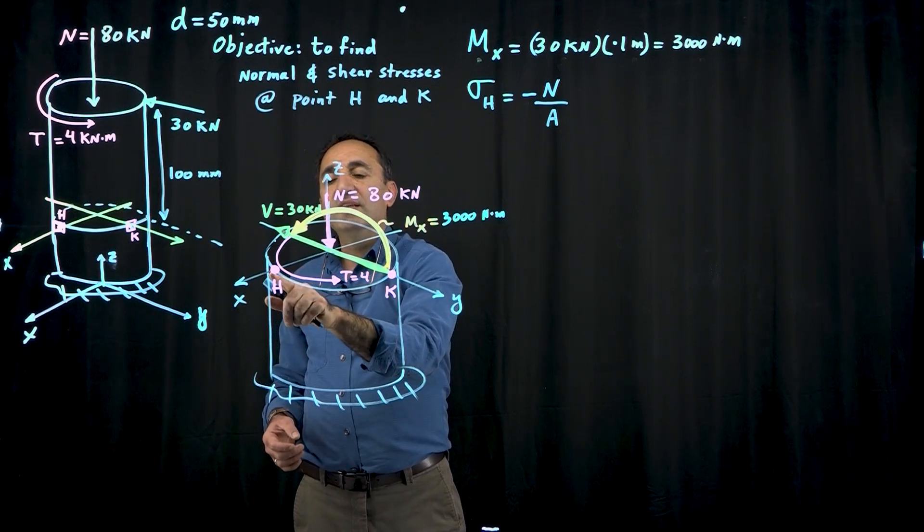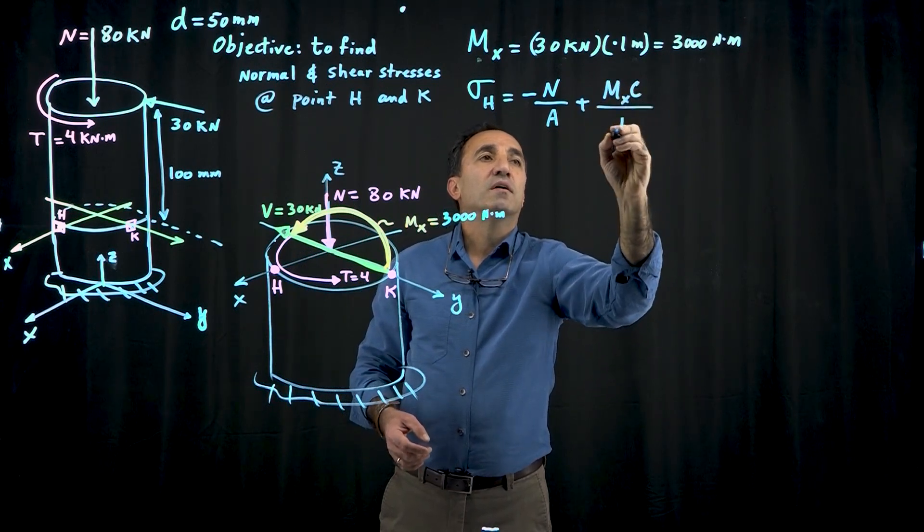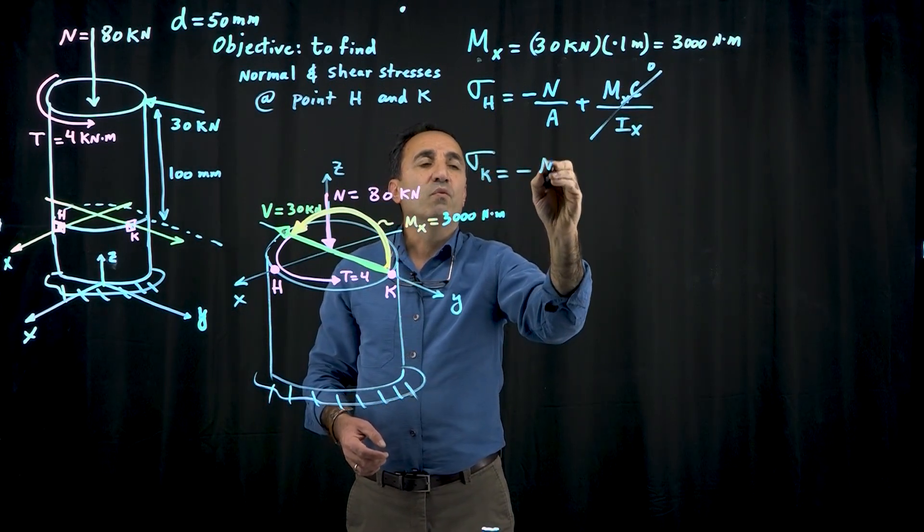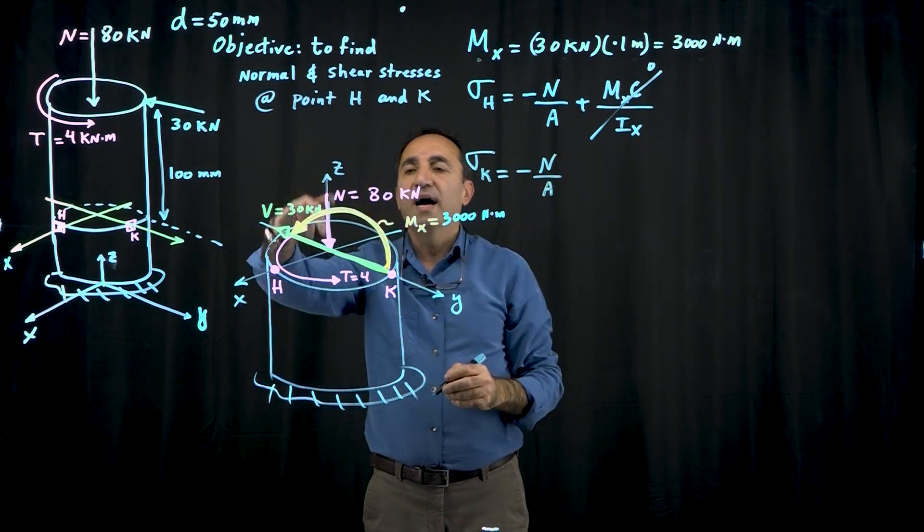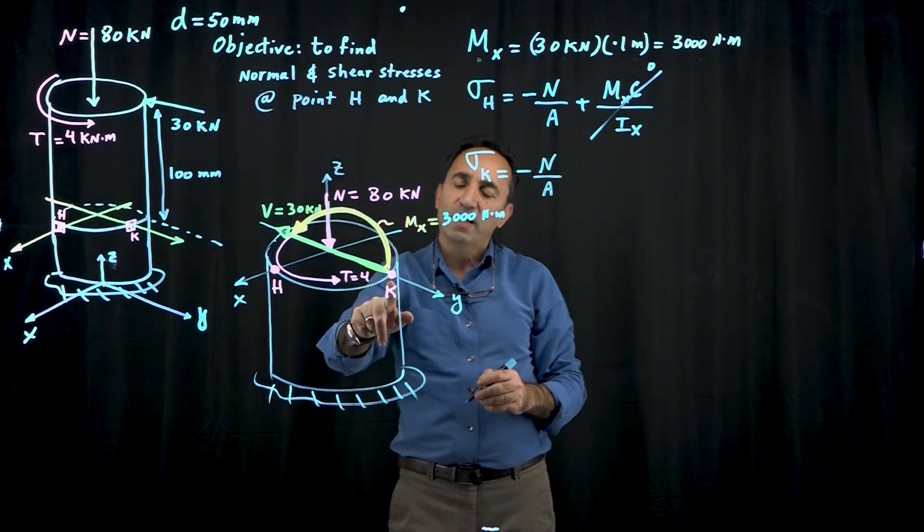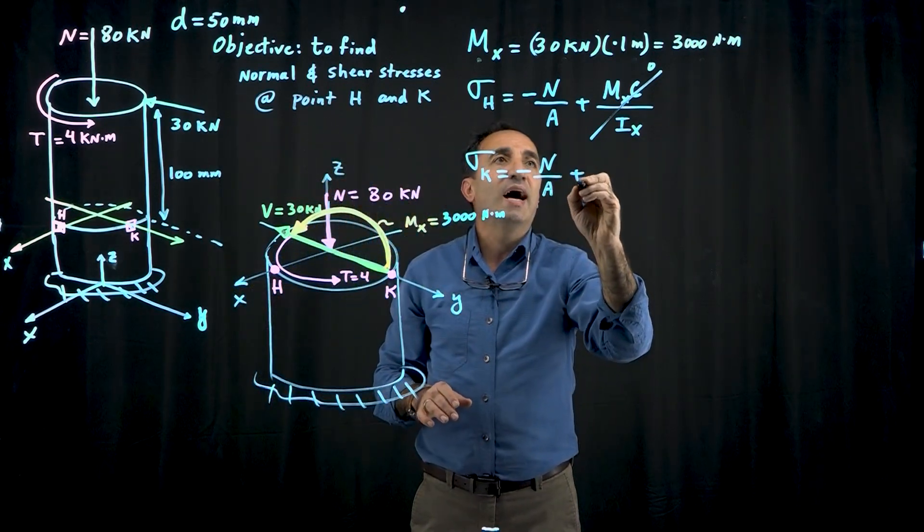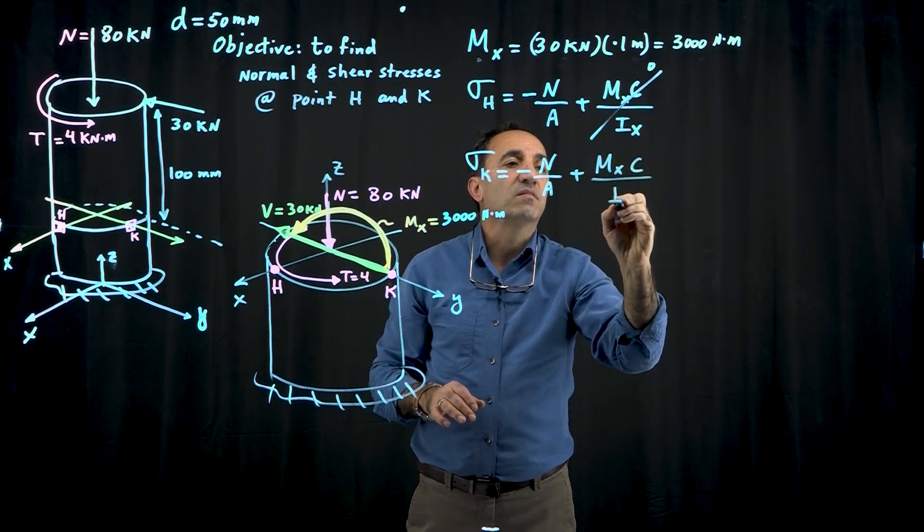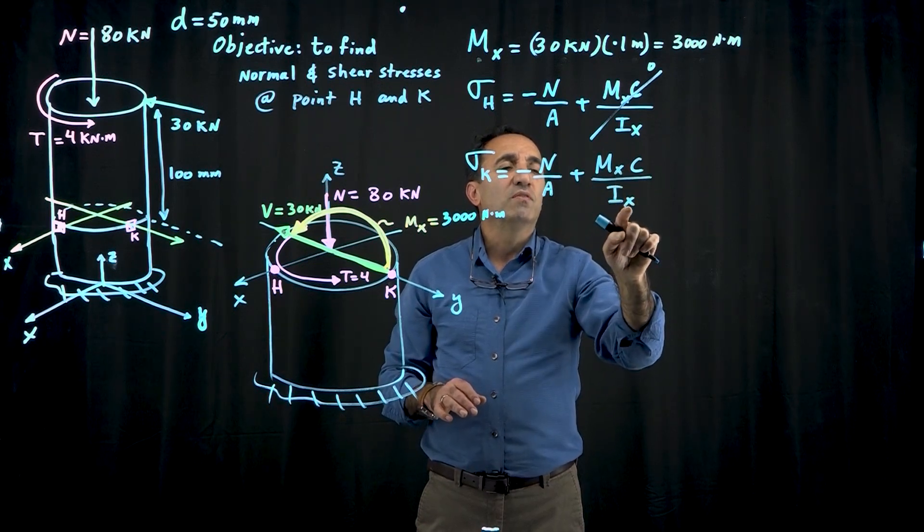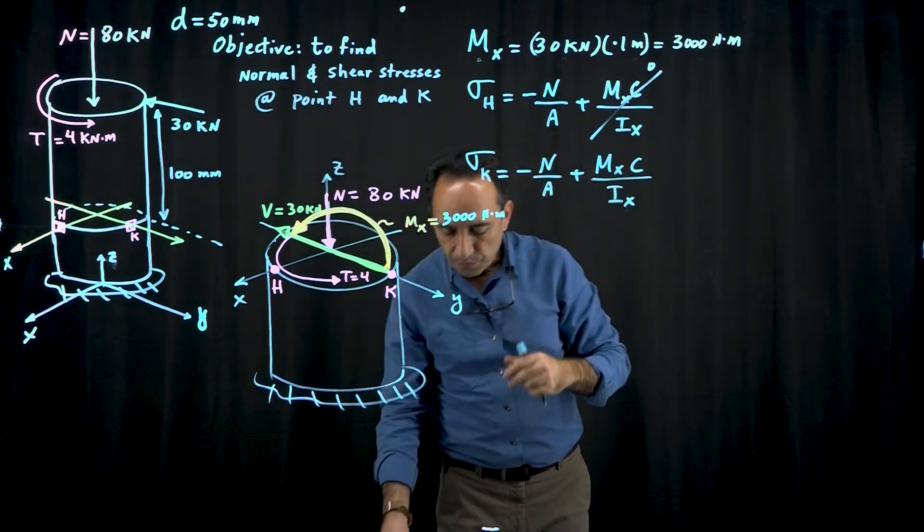Therefore, we have compressive stress equal to N over A. A minute ago we said the moment about the x-axis has no effect for point H, so no MC over I term. But for K, we have the compressive stress due to the 80 kilonewton load, but point K is in tension from the moment about x-axis, so we add Mx*c divided by Ix.